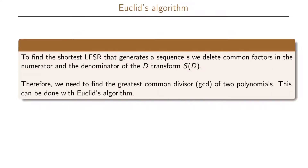This means we can use Euclid's algorithm to find the shortest LFSR that can generate a specific sequence. To find the shortest LFSR that generates a sequence S, we cancel all the common factors in the numerator and denominator of the D-transform S(D). We need to find the greatest common divisor of two polynomials, which we can do with Euclid's algorithm.